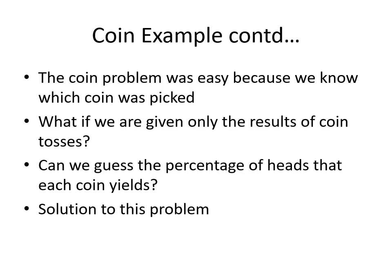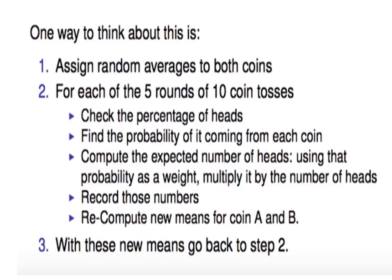The solution to this point is by using the concept of expectation maximization. How do we arrive at it? To start with, assign random averages to both the coins. For each of the five rounds of 10 coin tosses, first check the percentage of heads. Find the probability it is coming from each of the coins. Compute the expected number of heads using that probability as weight and multiply it by the number of heads. Record those numbers and recompute the new means for coin A and coin B. With this new means, go back to step two and iterate the entire process till such time it converges. That is, there is not much discrepancy between the previous value and the next value or between two iterations.